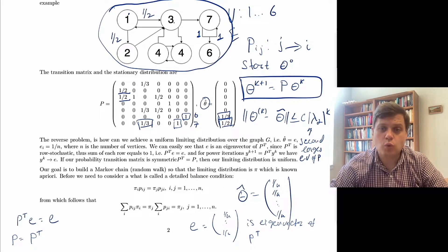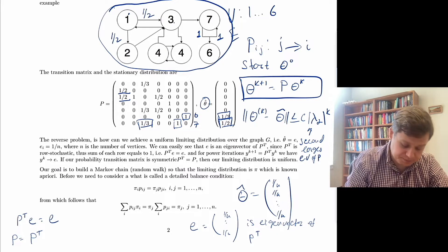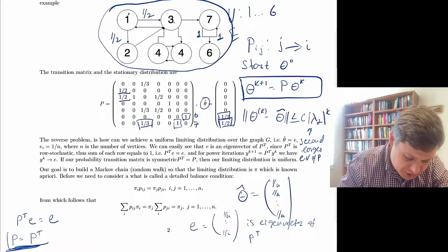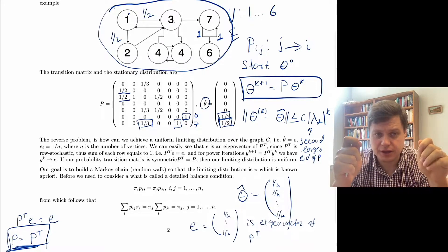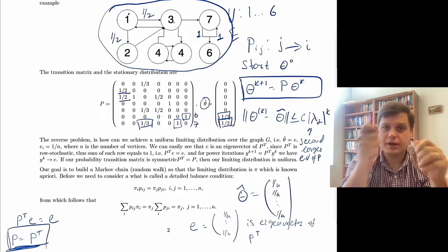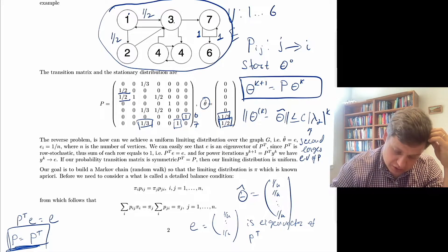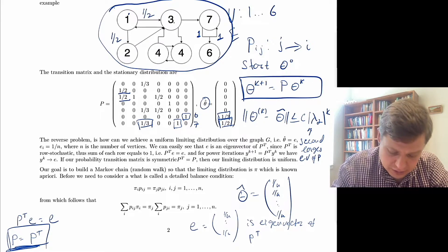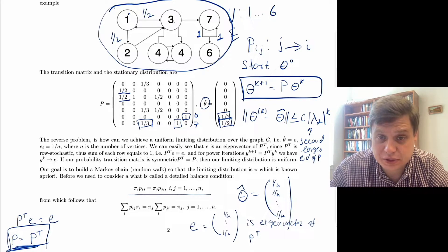Our goal is to build a Markov chain or random walk so that the limiting distribution pi is known a priori. We need to consider what is called the balance equation. The balance equation is a slightly stronger requirement than having symmetric transition probabilities. Symmetric transition probabilities mean that if you're in node one with a certain chance of going to node three, then the probability of going from three to one is the same.